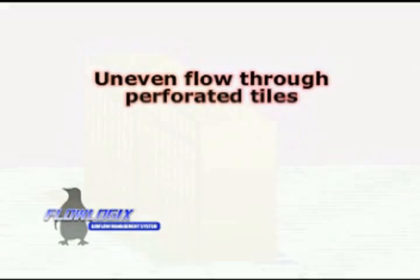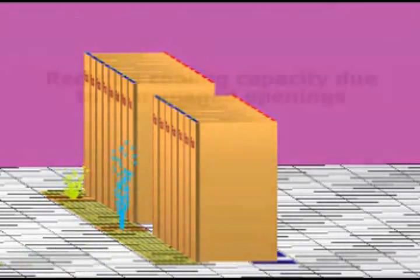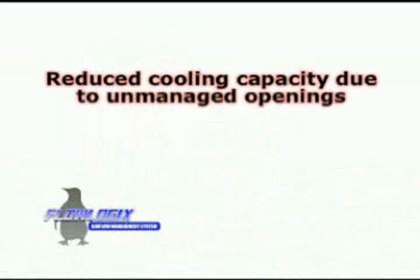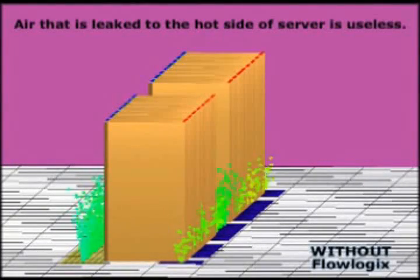Uneven flow through perforated tiles leads to hotspots within the room. This is due to an unbalanced air flow velocity and unbalanced pressure in the subfloor. Air flow leaked through unmanaged cutouts misses the heat load and is useless, greatly reducing cooling capacity as well as cooling efficiency.